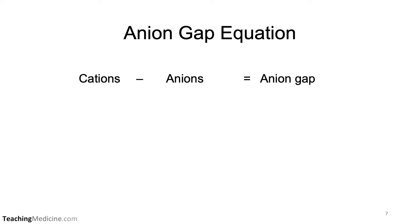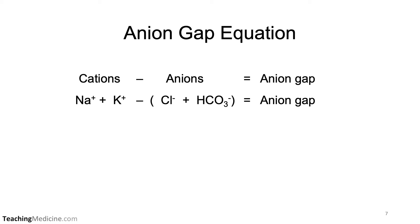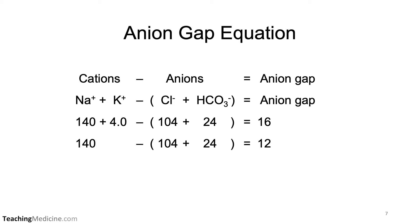The anion gap equation is cations minus anions, which is sodium plus potassium minus chloride plus bicarb. Using these numbers, we can see that the anion gap comes out to about 16. We can further simplify this equation by removing potassium. As potassium is usually close to a value of 4, we can reduce the anion gap from 16 down to 12.